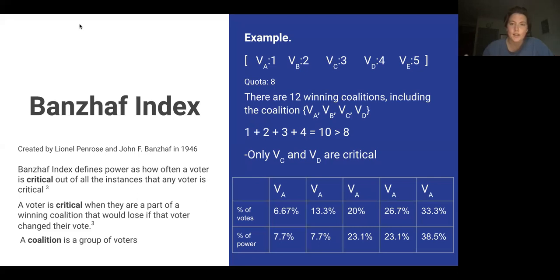As an example of that index, say we have a system with five voters A through E with all different weighted votes, and the quota is eight, just over half to pass or elect something. Now, out of all possible coalitions, there are 12 coalitions that could win, including the coalition of voters A, B, C and D. It's winning because adding all their votes together gives you 10, which is above the quota. But if we look at who's critical, voter A or voter B could both leave the coalition and the total number of votes would still be above the quota, so they're not critical.